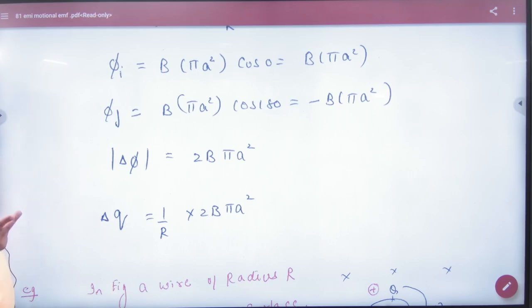How much charge flow? Total change in flux upon resistance R. So this is the answer. How to use formula? So first, total charge of formula. Total change in flux and resistance R.